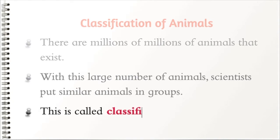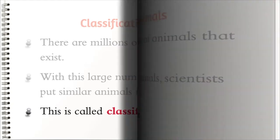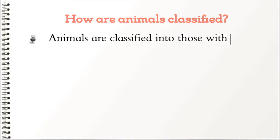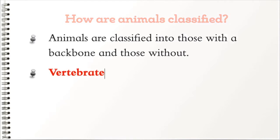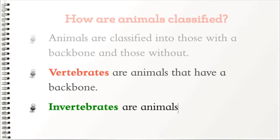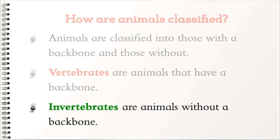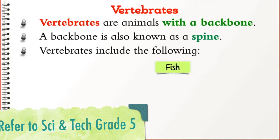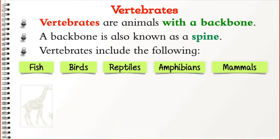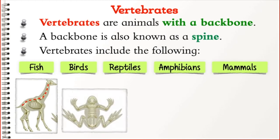This is called classification. How are animals classified? Animals are classified into those with a backbone and those without. Vertebrates are animals that have a backbone. Invertebrates are animals without a backbone. A backbone is also known as a spine.